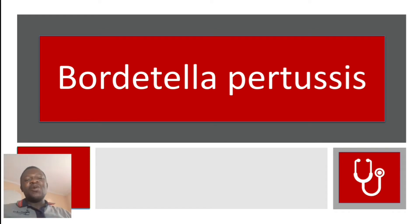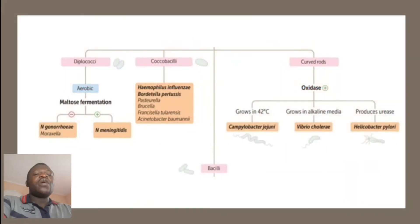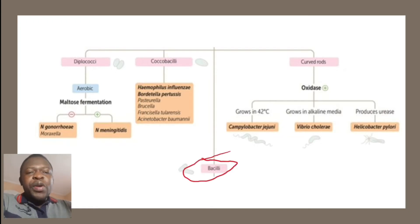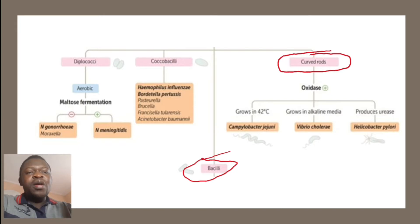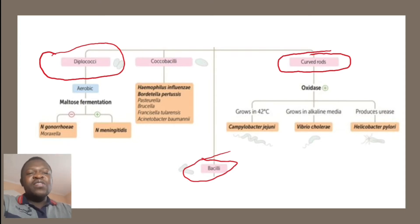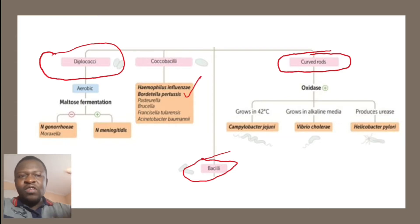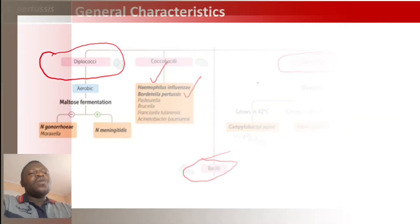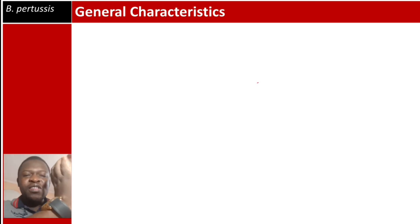Bordetella pertussis is another important bug which we need to cover in detail. This follows the algorithm we've been using throughout the entire bacteriology series, where we covered gram-negative bacilli, curved rods including cholera, campylobacter, helicobacter pylori, and diplococci including Neisseria gonorrhea, Neisseria meningitidis, and Moraxella catarrhalis. Now we are talking about gram-negative coccobacilli. In this video we are doing Bordetella pertussis; in the previous video we covered Haemophilus influenzae.